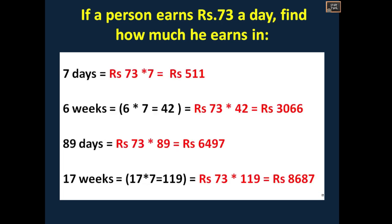For seven days: 73 into 7 = rupees 511. For six weeks: one week has seven days, so six weeks is 42 days. 73 into 42 = rupees 3066. For 89 days: 73 into 89 = rupees 6497. For 17 weeks: 17 into 7 = 119 days. 73 into 119 = rupees 8687. Make sure you write rupees whenever you write the answer.